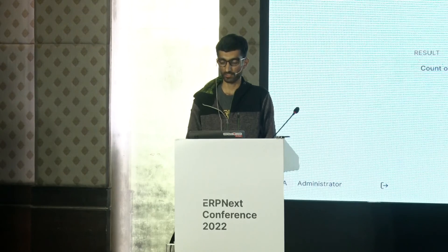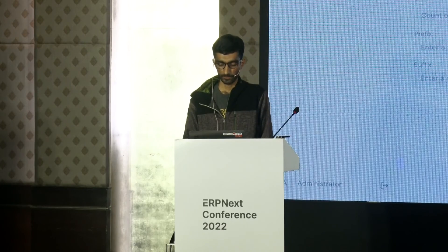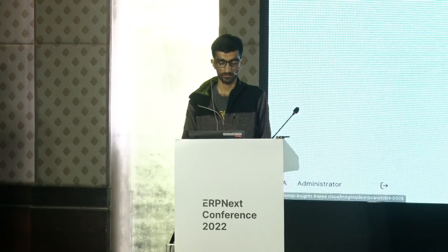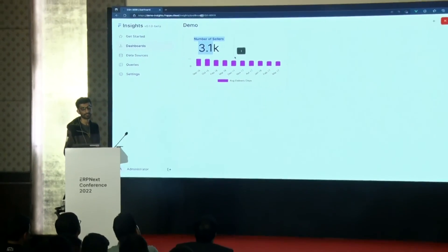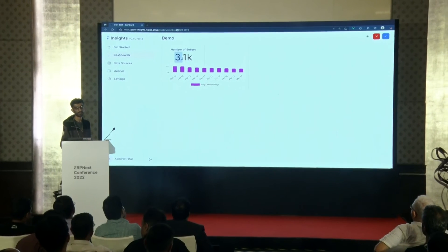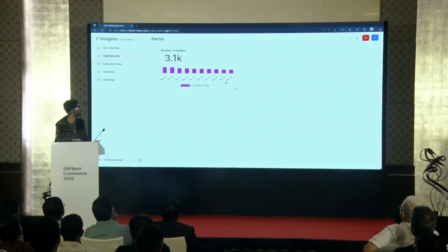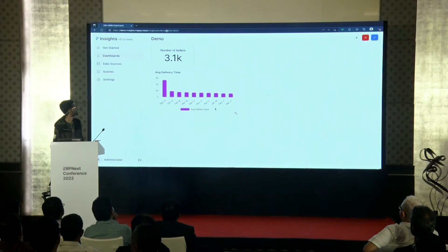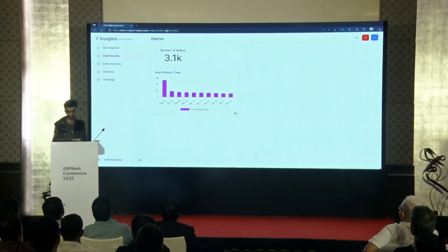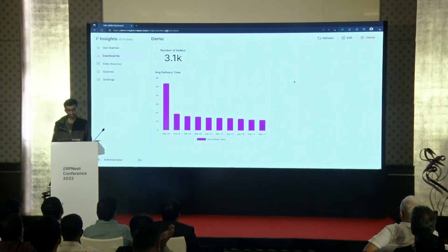Let's start with this one — add to dashboard, select the dashboard. When you go to the dashboard, it's there. Number of sellers — I'll do it for two. What's more cool? Click edit. The chart is there and you can drag it anywhere you want. You can resize the chart right from the UI.